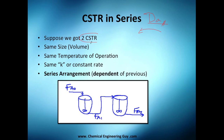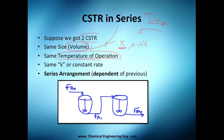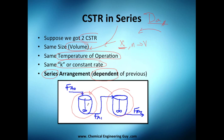The key difference now is that they are the same size — same volume. Before, we didn't analyze the same-size case. Now we will analyze same size, same volume, and we're more interested in the Damköhler number and how volume interacts with the number of tanks. Same temperature operation, same constant rate, and they're arranged in series, meaning each reactor depends on the previous one.